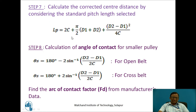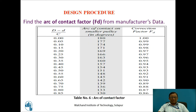Then we calculate the angle of contact for the smaller pulley. The equation for the open belt system is: 180° − 2·sin⁻¹((D2 − D1) / 2C). Based on this angle of contact, we select a standard arc of contact factor. The manufacturer's power rating data is tested at a standard angle of 180°, but in practical applications this angle varies. To account for this variation, we use the arc of contact factor FD — for example, if the angle is 160°, FD is 0.95.